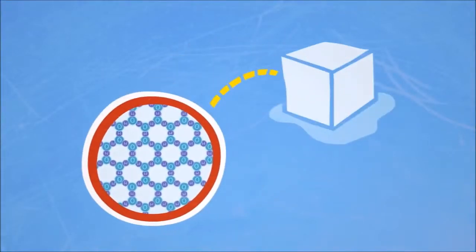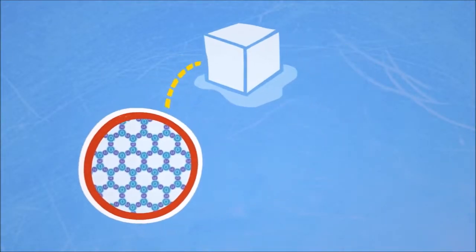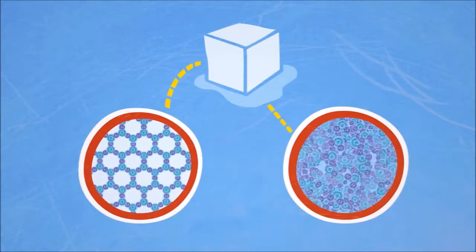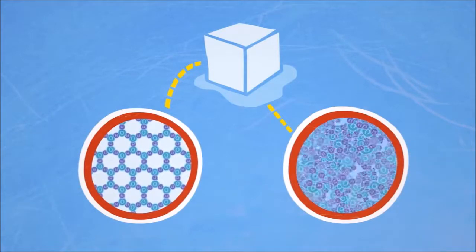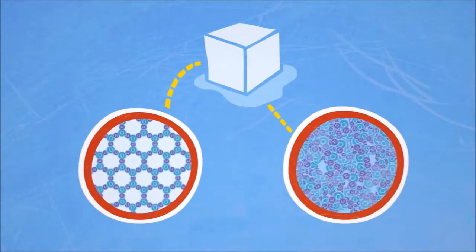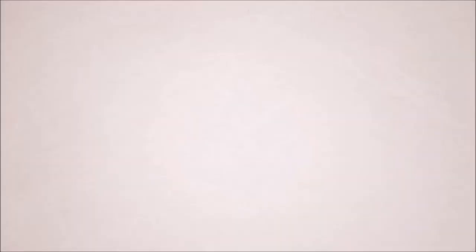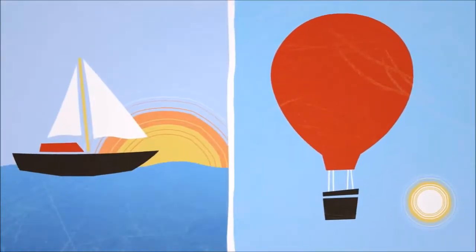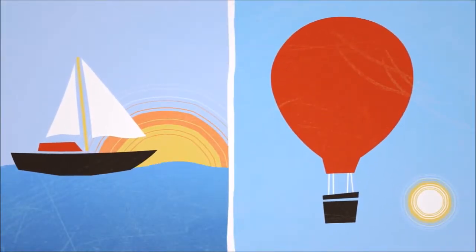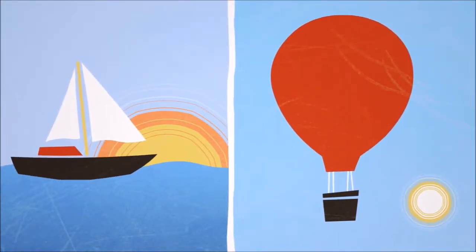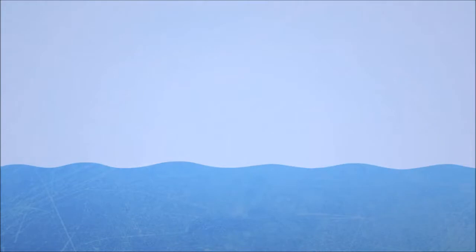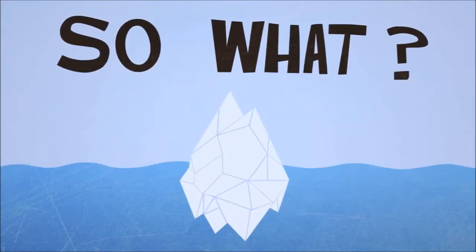Below four degrees, hydrogen bonds form much more frequently than they break, and beautiful ordered structures emerge. The ordered hexagonal structure of ice is less dense than the disordered structure of liquid water. Since ice is less dense, it floats.